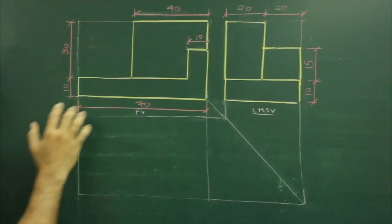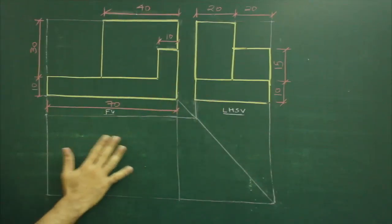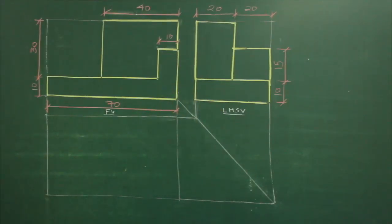In this problem, two views are there - front view and side view - and we need to draw the top view. So first what we will do, we will mark the number of surfaces.